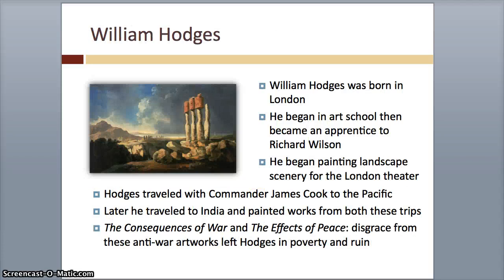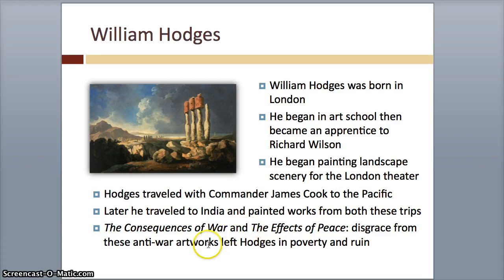New person: William Hodges. He was born in London and began art school, then began painting landscape scenery for London Theatre. He traveled with James Cook — some of you may have heard of James Cook of the Pacific — and he traveled to India and painted works from both these trips, mostly landscapes. The Consequences of War and The Effects of Peace were two of his anti-war artworks. He was disgraced because of them and they left him poor and sad.